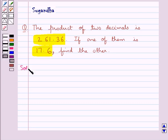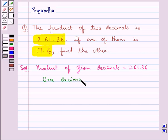Let's move on to the solution now. We are given the product of given decimals is equal to 261.36. Now one decimal is given as 17.6.